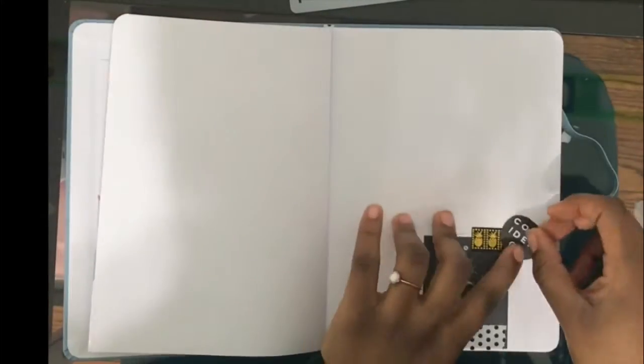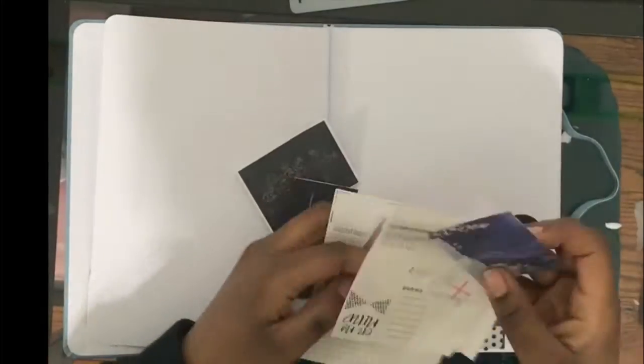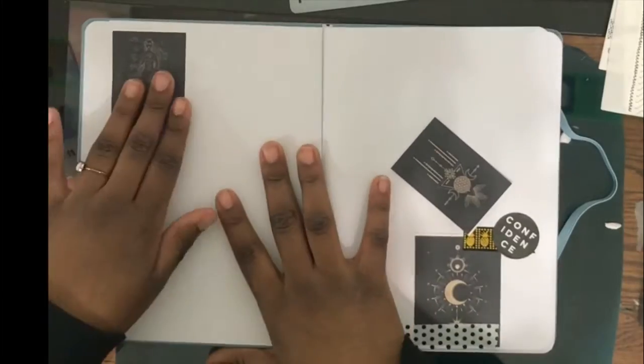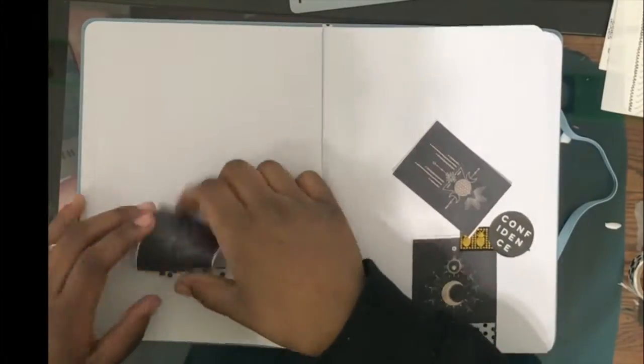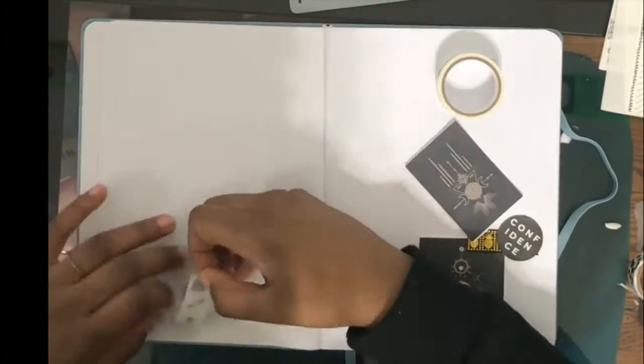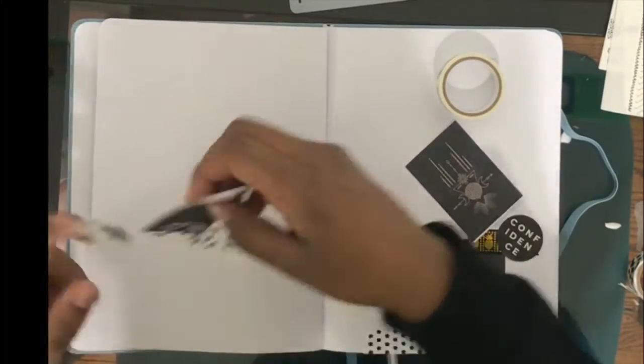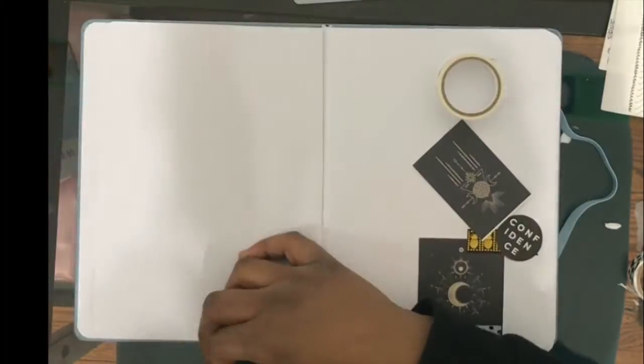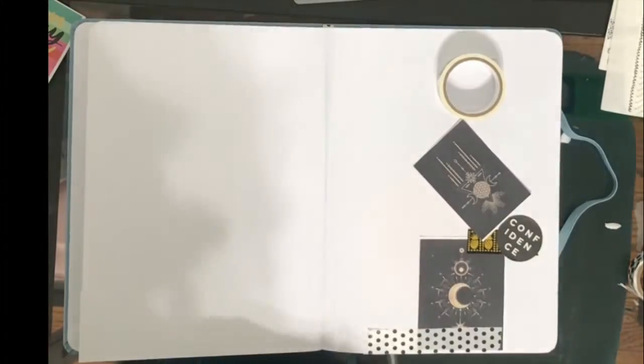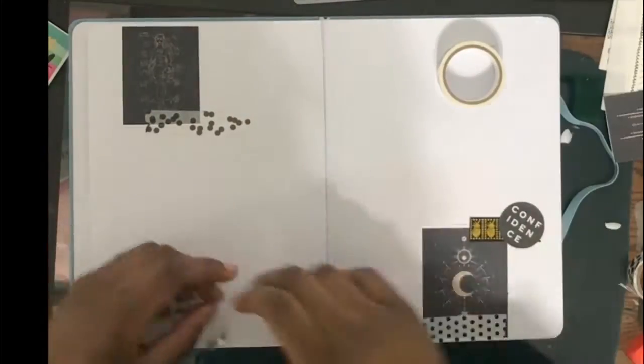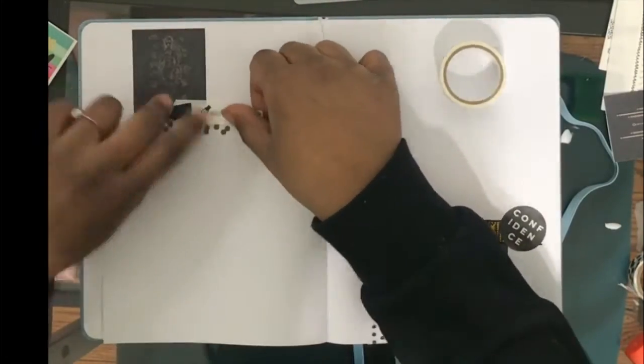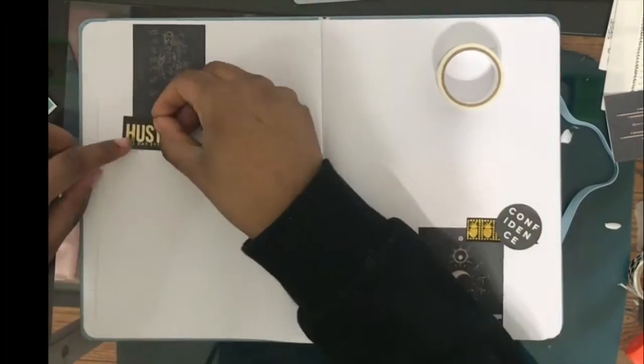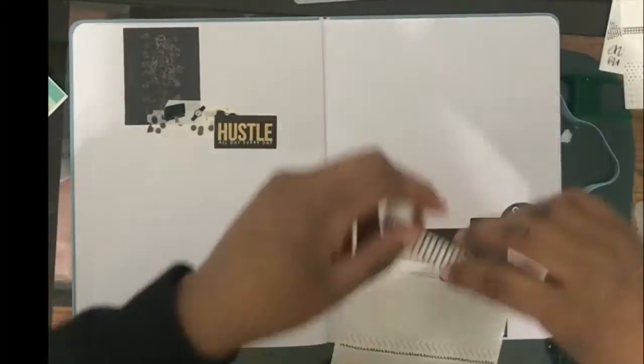Since I haven't been bullet journaling for a long time, I still need to be able to refer back to my key. So, this is my page for my key, and I always do it on a little flip out thing that you will see in a moment, and it's really easy because it doesn't matter where you are in your book, you can always refer back to your key.